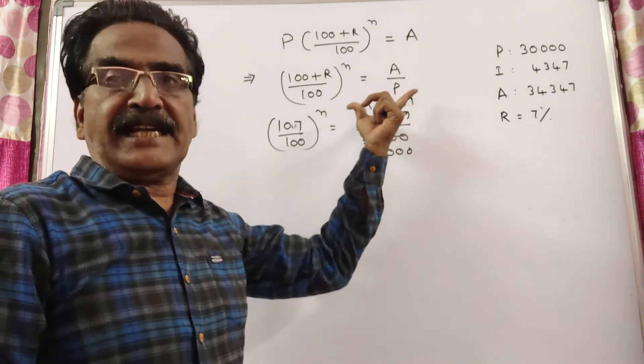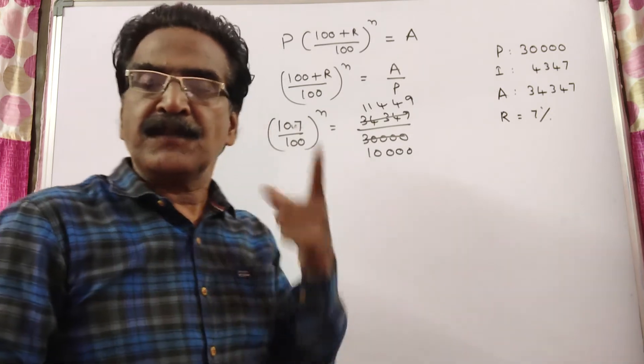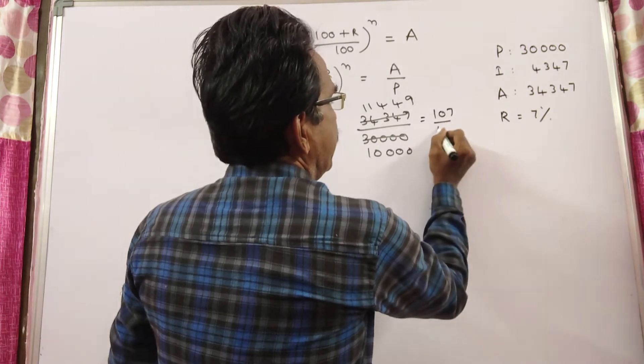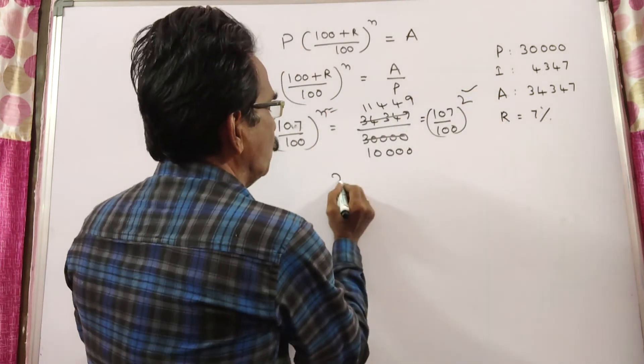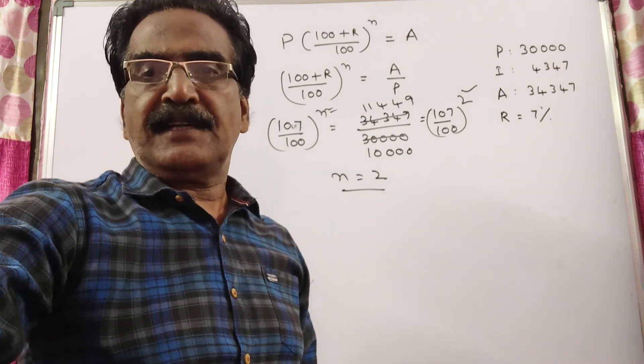So now the right side fraction 11,449 by 10,000 equals 107 by 100 whole square. Therefore, N equals 2. So 2 years is your answer. Okay friends, thank you.